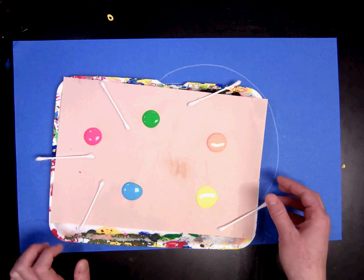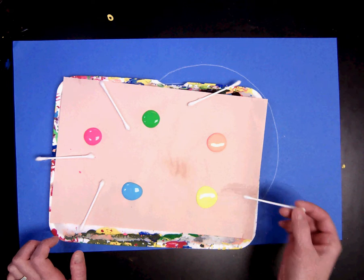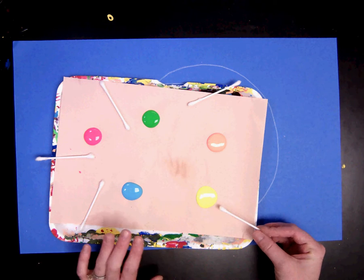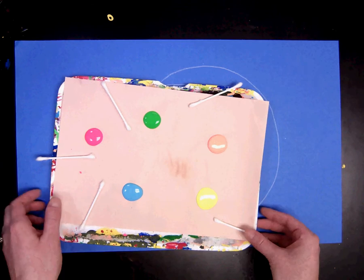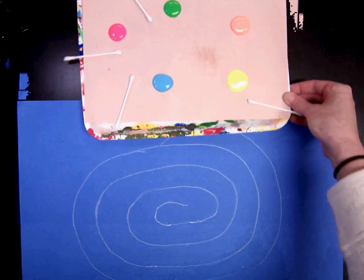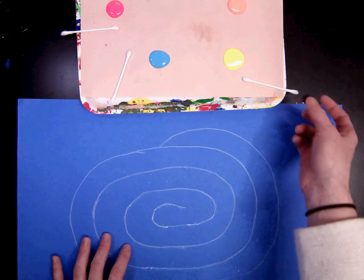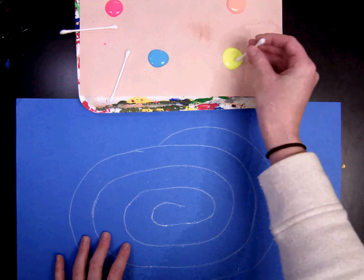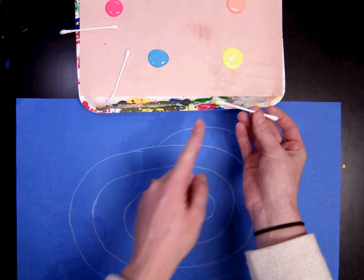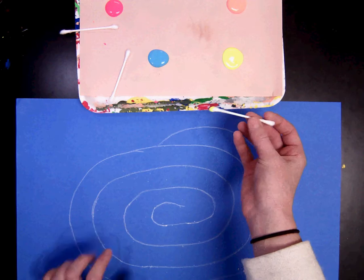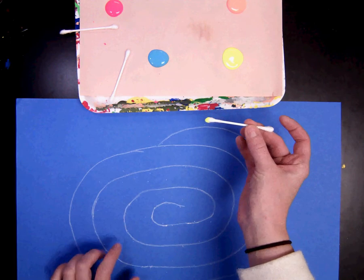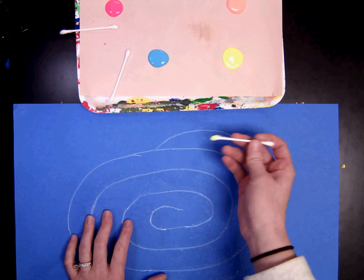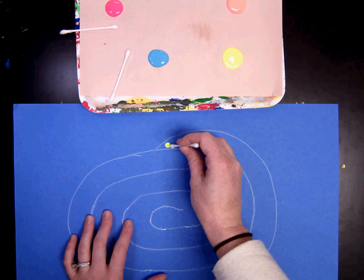For each paint color there's going to be a q-tip and that q-tip is used for only that color. We are not mixing colors. And you can start anywhere. I'm going to start with neon yellow and I'm going to keep one side of the q-tip clean always and the other side with paint. I'm just going to start doing dots.